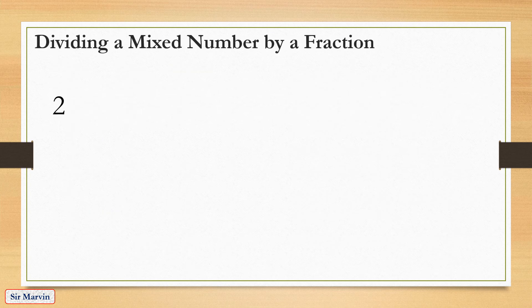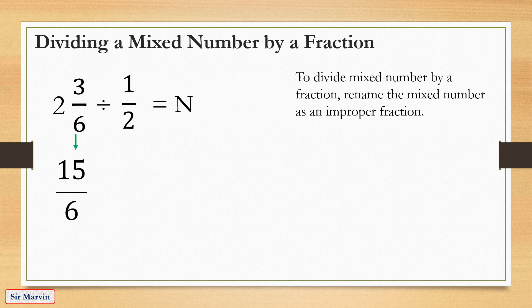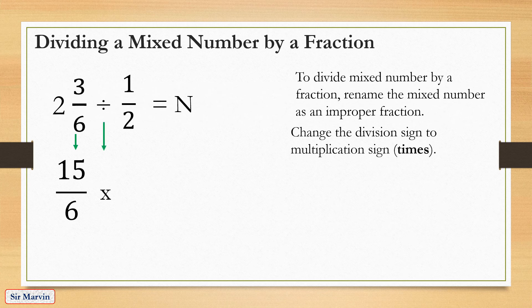Next is dividing a mixed number by a fraction: 2 and 3 sixths divided by 1 half equals n. To divide a mixed number by a fraction, rename the mixed number as an improper fraction. So 6 times 2 equals 12, plus 3 equals 15, and we copy the denominator 6 — giving us 15 over 6. Change the division sign to multiplication, then get the reciprocal of the divisor: 1 half becomes 2 over 1.